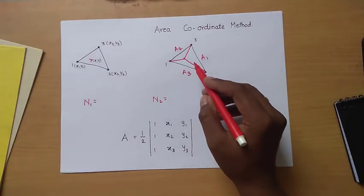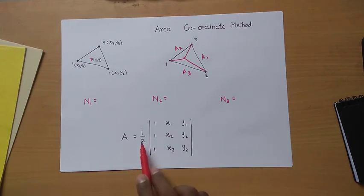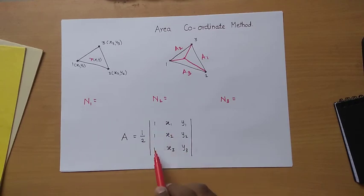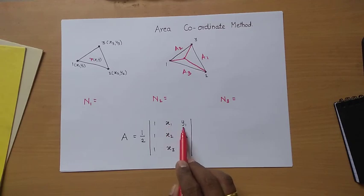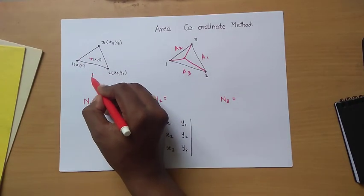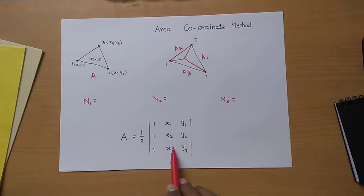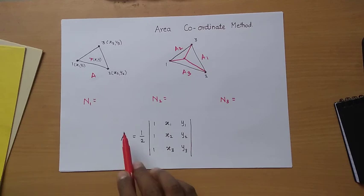We can find out the area using this formula: one half times the determinant of a matrix where the first column is all 1s, the second column has the x-coordinates, and the third column has the y-coordinates — that is x1, y1, x2, y2, x3, y3. For example, to find the total area A of the triangle, we evaluate this determinant divided by 2.